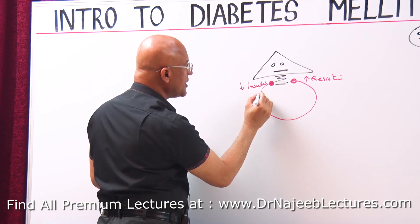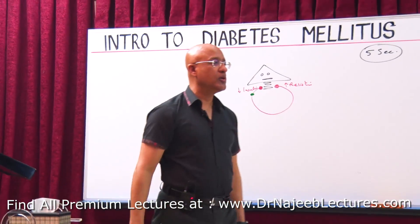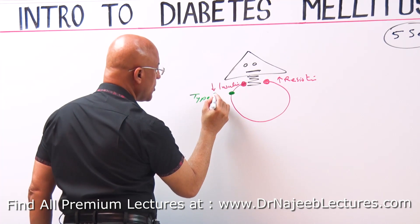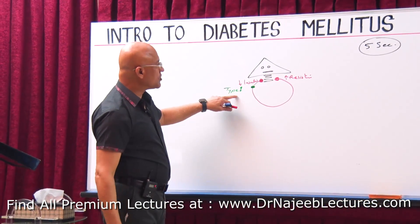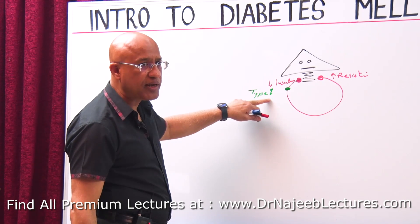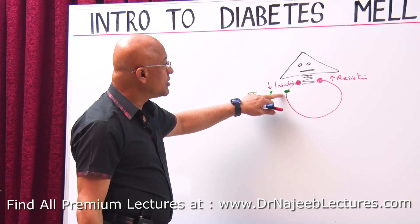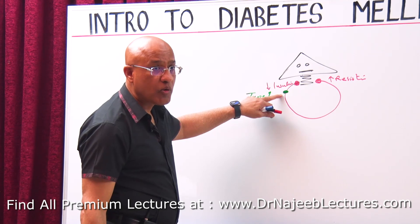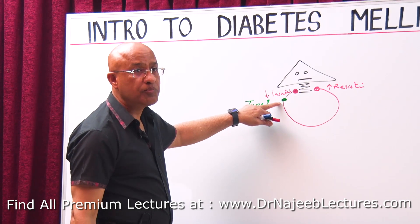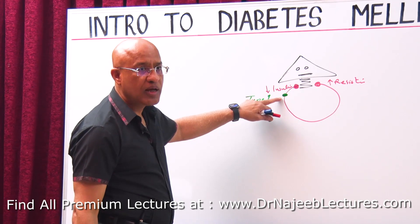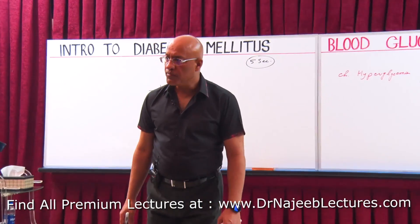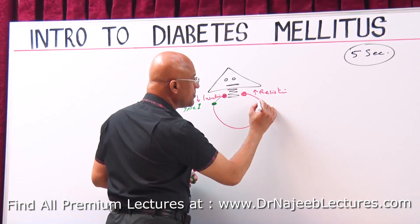The classical example of reduced insulin production is Type 1 diabetes mellitus. In Type 1 diabetes, there is severe reduction in insulin production — sometimes absolutely absent — because the beta cells which produce insulin are attacked and destroyed by the immune system through an autoimmune reaction.